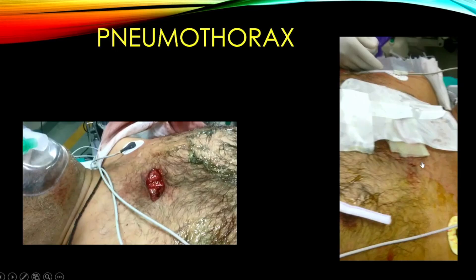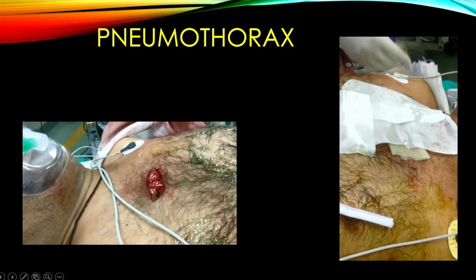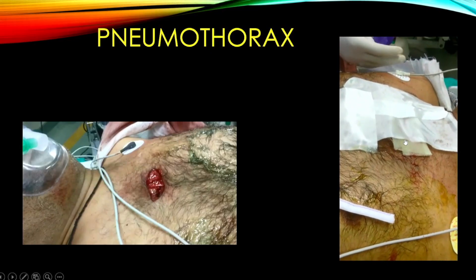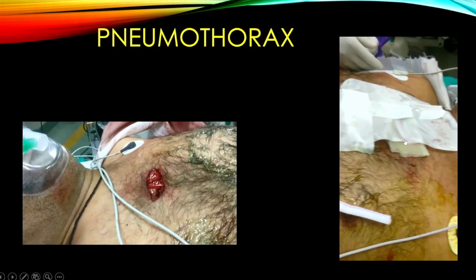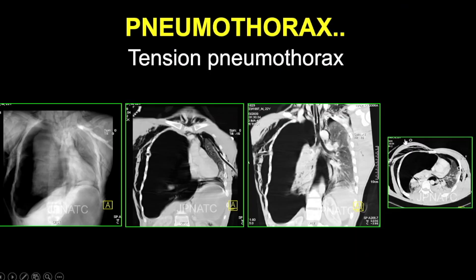The concept of a three-way occlusive dressing is important: it's put so that if you completely close it, it will turn into a tension pneumothorax. You have to allow that during inspiration it will close, but during expiration the lung air can go out. That's what is important for an open pneumothorax. If not managed, the pneumothorax may extend to form a tension pneumothorax, which is a life-threatening situation.